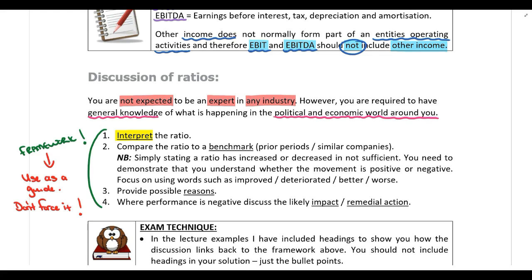For example, if you've calculated the movement in revenue, the movement in revenue is the movement in revenue, so there won't be any marks available for interpreting that. The same applies to the gross profit margin or the net profit margin — those are self-explanatory. This often applies to profitability ratios. When studying the lecture notes, if I've included an interpretation it means it's possible to interpret the ratio and you should also interpret it. If I have not included an interpretation, that means the ratio is too simple and there won't be any marks available for interpretation.